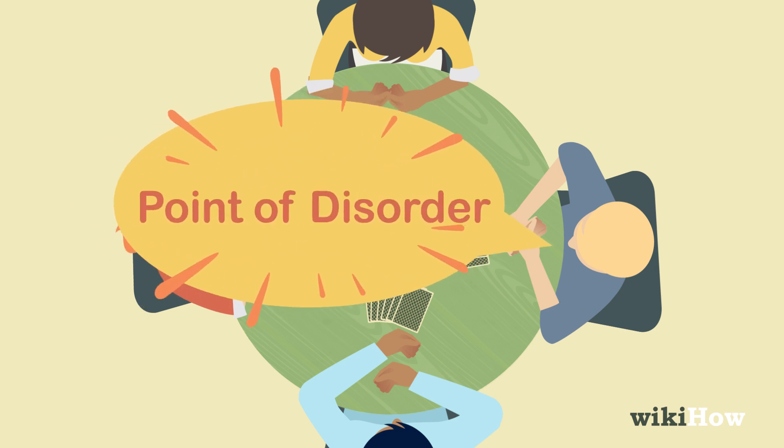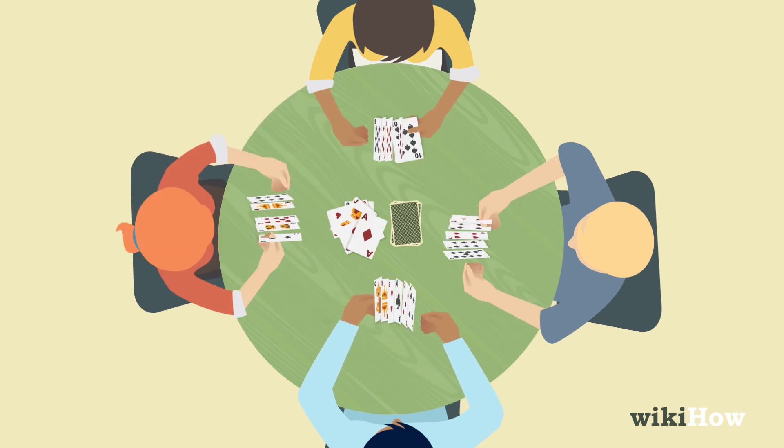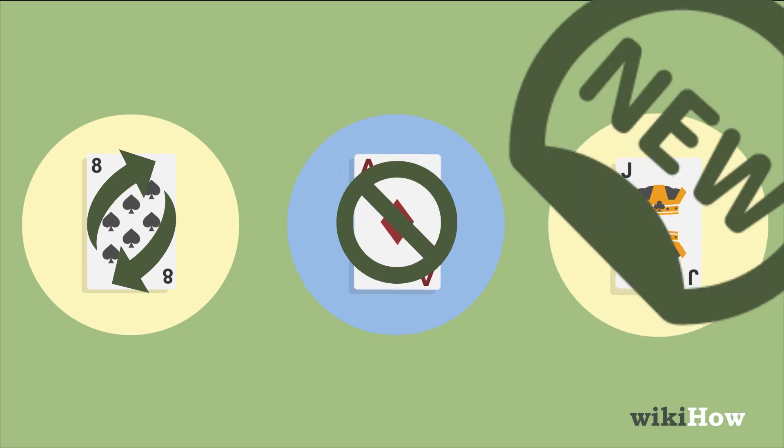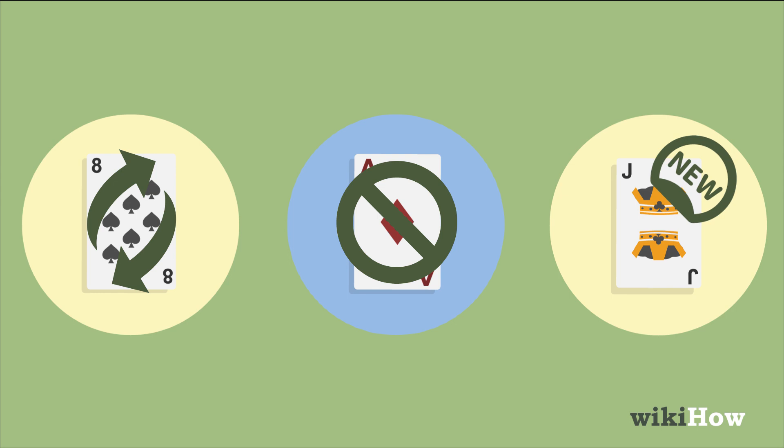When somebody calls point of disorder, play resumes. Other common optional rules include reversing play when an eight is played, playing an ace to skip the next player's turn, and calling out a new suit of your choice when you play a jack.